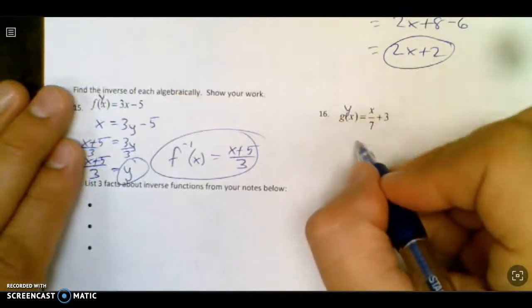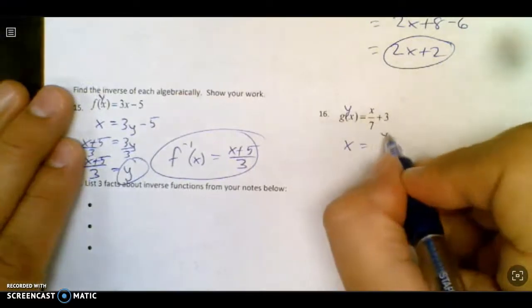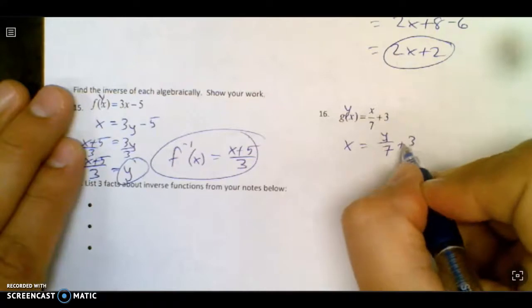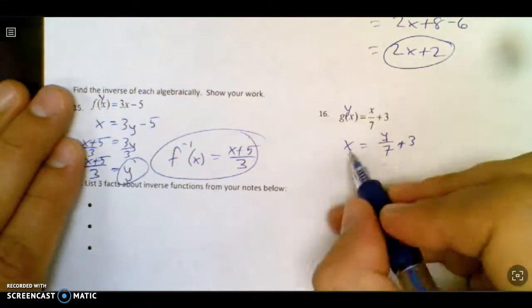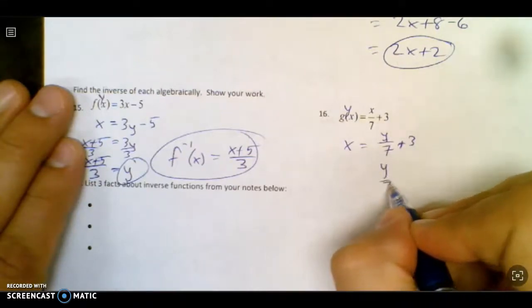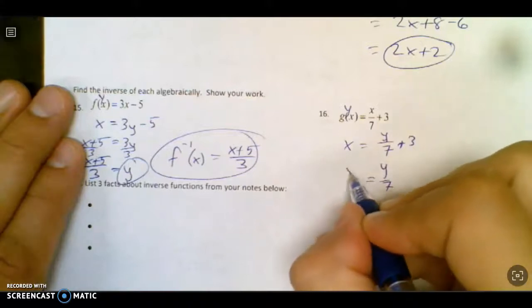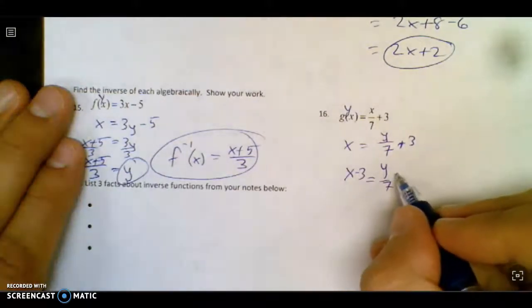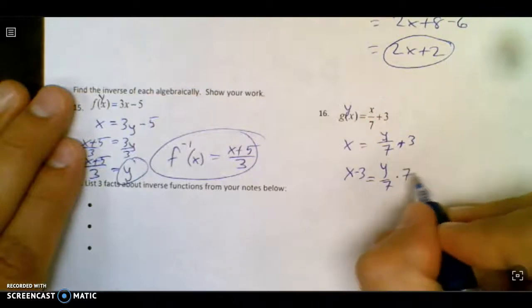Similarly, that's a y. We're going to switch the x and the y. First thing I do is move the 3 over with subtraction. And last, how do I undo divide it by 7? You multiply it by 7.